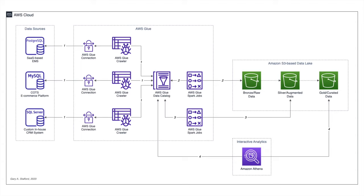In step two, we will move the data from our data sources into the bronze or raw area of our data lake using a series of AWS Glue Jobs based on Apache Spark. We will store the data in Apache Parquet format, a columnar format commonly used to store data in data lakes. This bronze data will be cataloged in the same AWS Glue Data Catalog. In step three, we will cleanse, augment, and prepare the data for analytics using more AWS Glue Jobs, writing into the silver area. In step four, we will use Amazon Athena to produce curated datasets by joining silver tables, partitioned based on the most common query patterns of our end users, written to the gold area as partitioned Apache Parquet files.